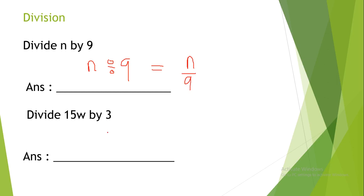Divide 15w by 3. So, 15w divided by 3 equals 15w out of 3, equals 5w.